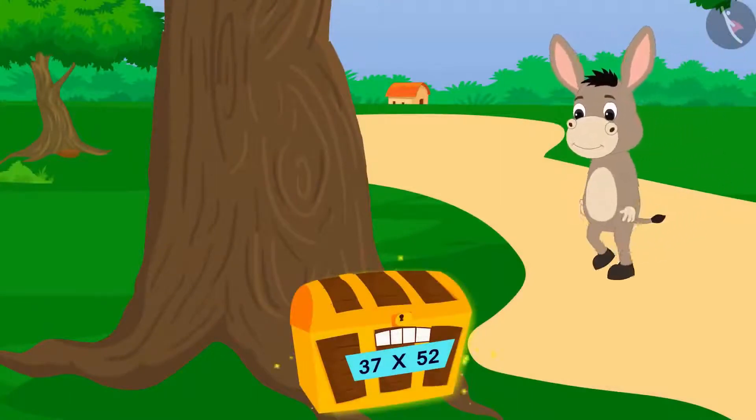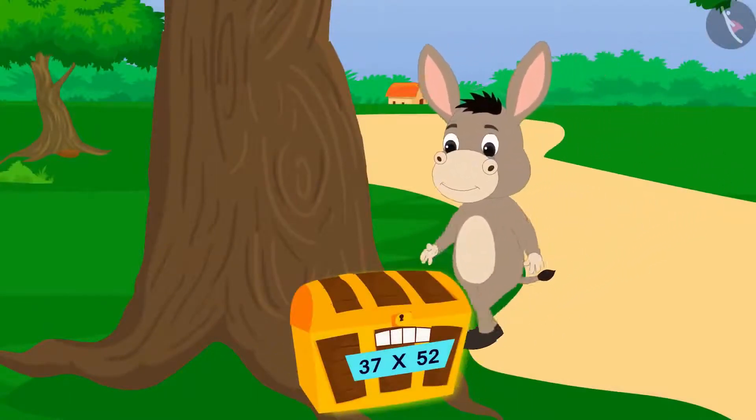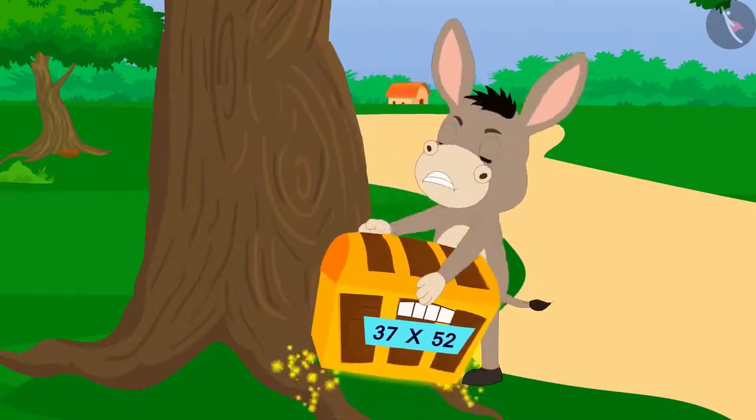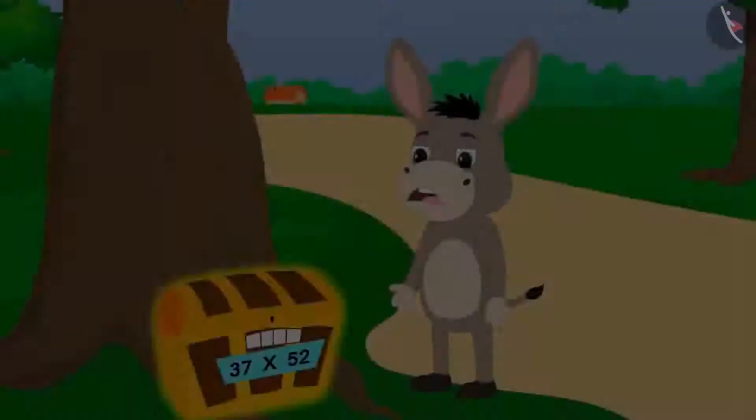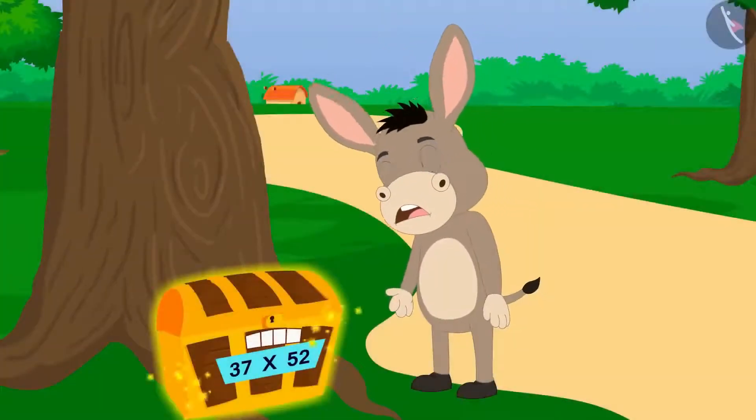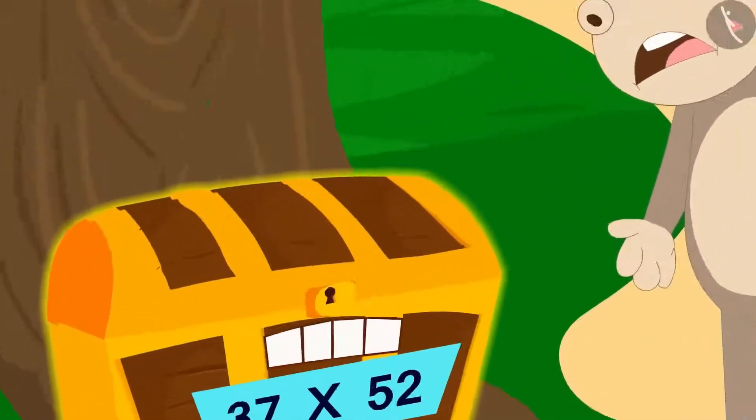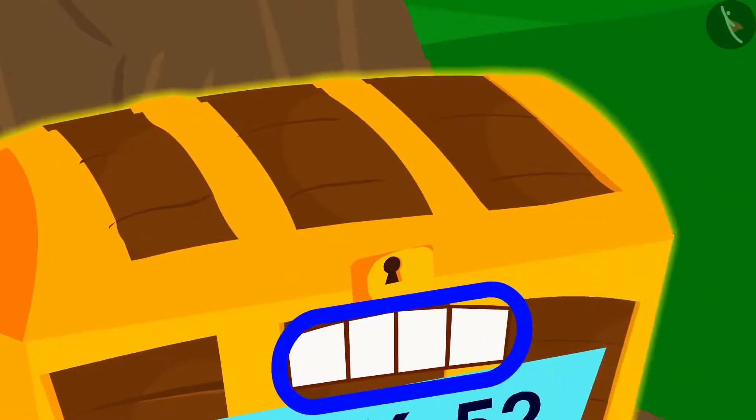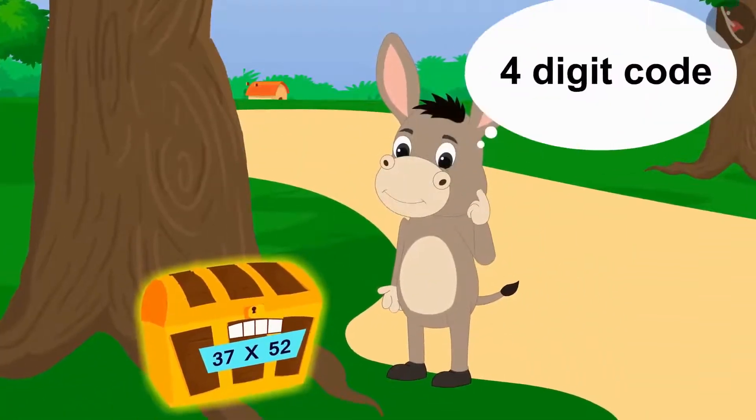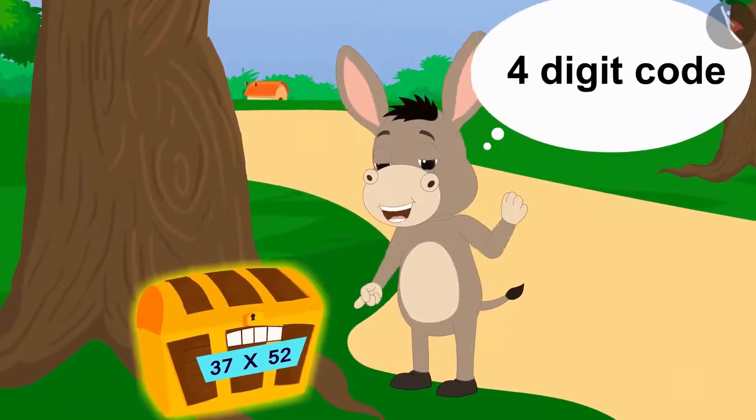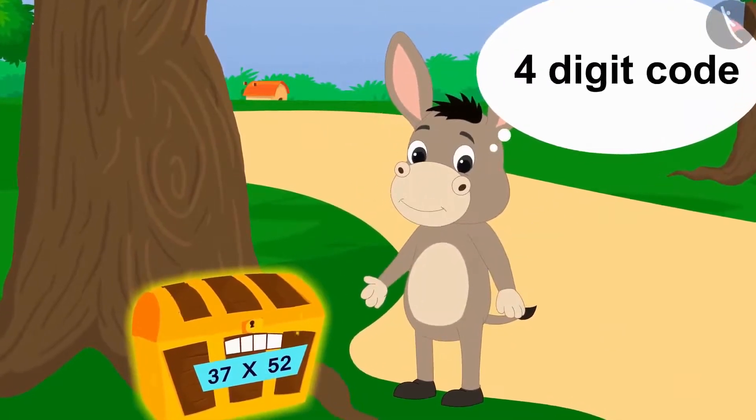Bhola took a closer look and tried hard to open the box, but the box did not open. Bhola noticed that the box was closed with a lock which could be opened with a four-digit code. Looks like I'll have to use a four-digit code to open this box, thought Bhola.